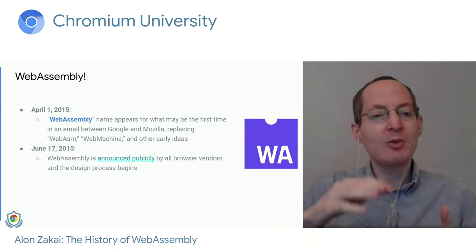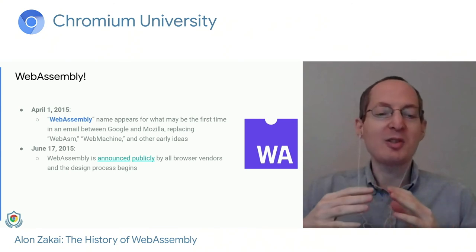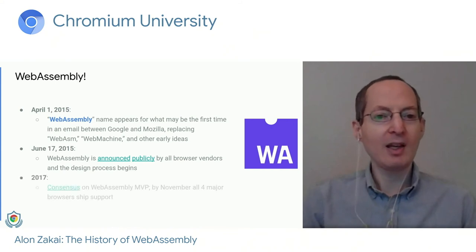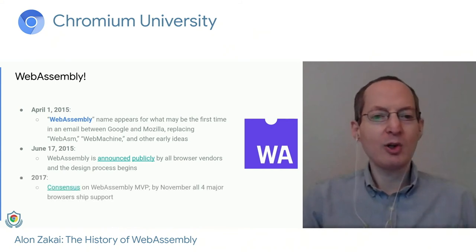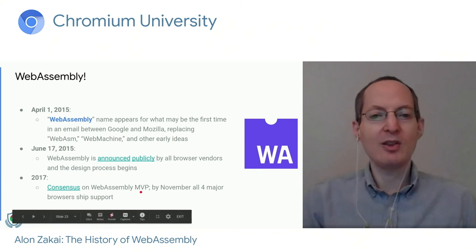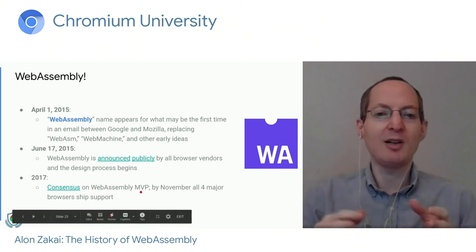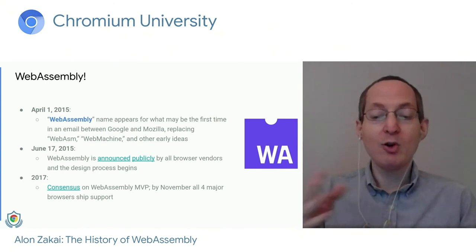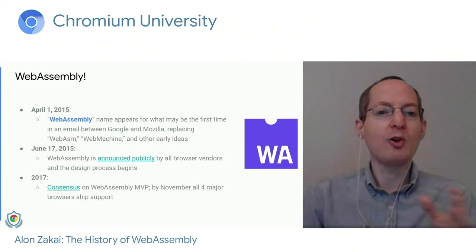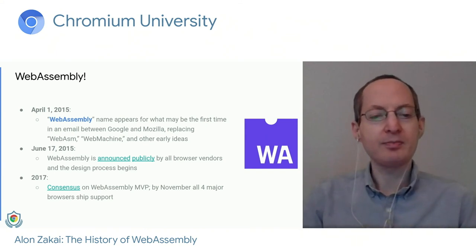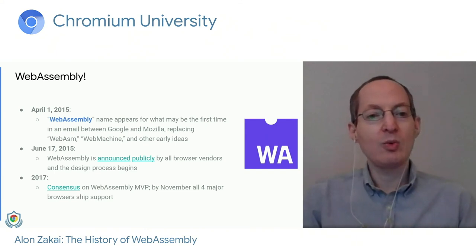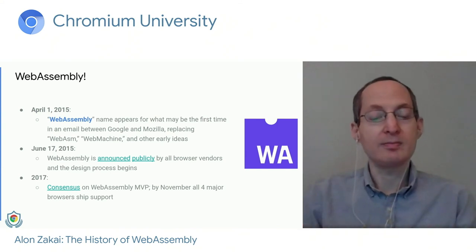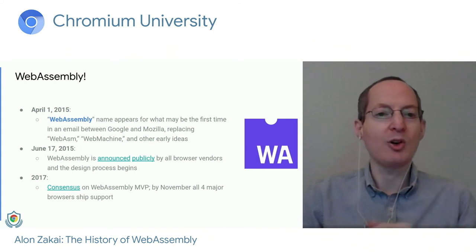That was a pretty big deal — you don't just every day announce that you're standardizing a new language of this scope. Then we started the design process, which took a while. After two years of very hard work, in 2017 we reached consensus on the WebAssembly minimum viable product — WebAssembly 1.0. And before the end of that year, by November, all four major browsers shipped support for it.